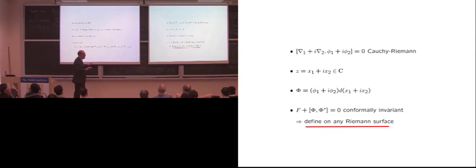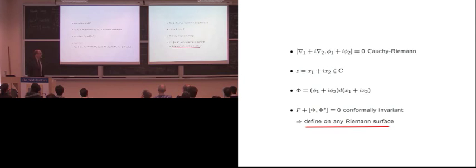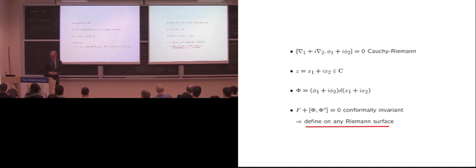The remaining equation says we have to equate a curvature with a bracket of phi1 and phi2. Since curvature is a two-form, phi had to be a one-form. Once you write the same equations on R2 in this form, you see that they make conformally invariant sense, so you can define them on any Riemann surface. You can look for solutions on a compact Riemann surface, where the analysis is much better behaved and there are well-defined methods for gauge-theoretic problems.